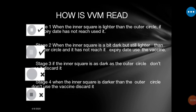Stage two — when the inner square is a bit darker but still lighter than the outer circle and the expiry date has not been reached, the vaccine is still okay and you are allowed to use it. The whitish part inside the square is not as bright as in stage one.